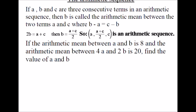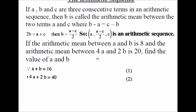Example: if the arithmetic mean between A and B is 8 and the arithmetic mean between 4A and 2B is 20, find the value of A and B. We have three terms forming an arithmetic sequence: A, then 8, then B. Since 8 is the middle term, A plus B equals 2 times 8, so A plus B equals 16 — this is the first equation. And 4A plus 2B equals 20 times 2, giving 40 — the second equation. Solving both equations gives A equals 4 and B equals 12.